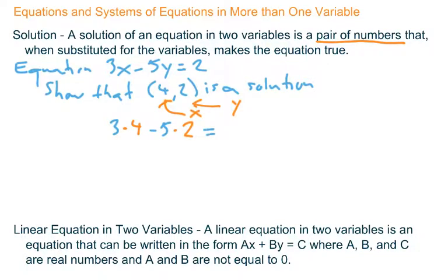If this is a solution, then that will equal 2. I'll put a little question mark here to indicate whether it's true or not. Let's check that out. So 3 times 4 is 12. 5 times 2 is 10. Is 12 minus 10 equal to 2? Yes. Yes, it is. So (4, 2) is the solution of that equation.